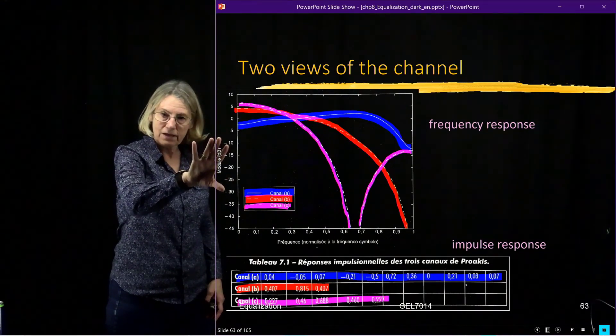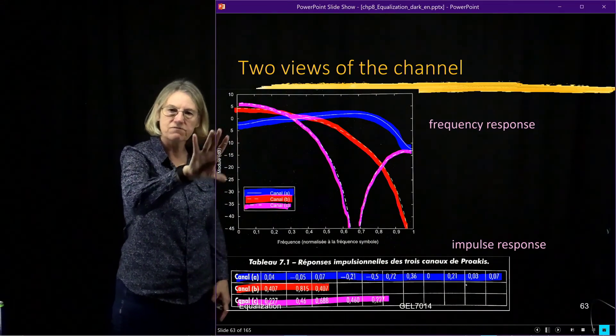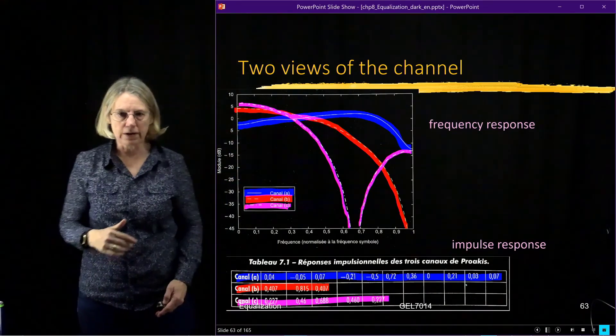So find the inverse of the channel, force the ISI to zero—they're saying the same thing. Just one is describing what's going on in the time domain, the other one is describing what's going on in the frequency domain.